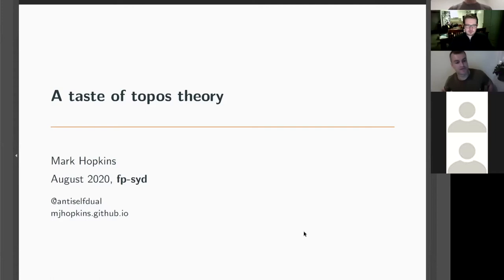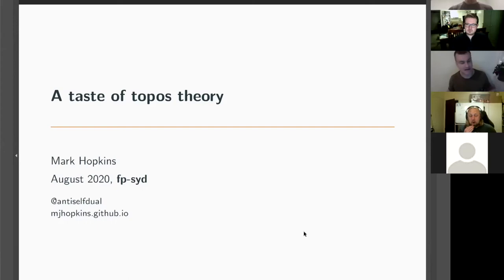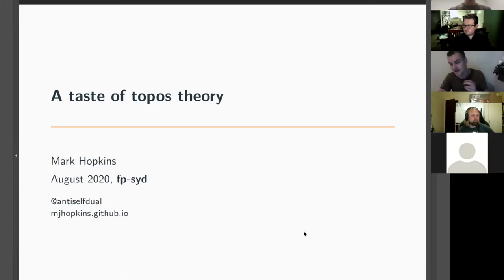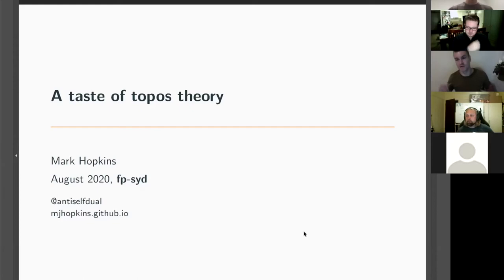Topos theory is a really deep and fascinating part of maths — it's a blend between logic and geometry. It has a lot of applications. The most famous book about it uses the old Indian fable about an elephant: three blind men each touch a different part and describe it completely differently. Topos theory is a bit the same — it's really hard to get an all-encompassing view because there are many different avenues to approach it.